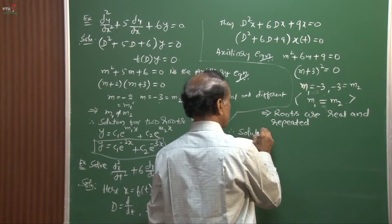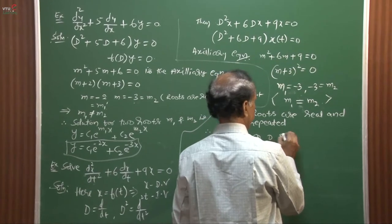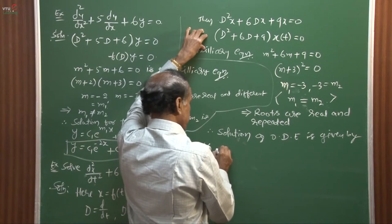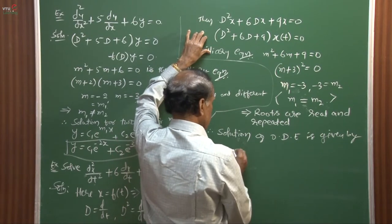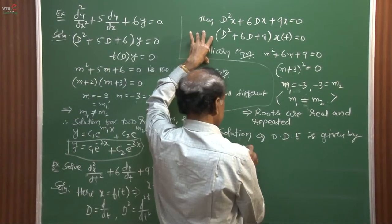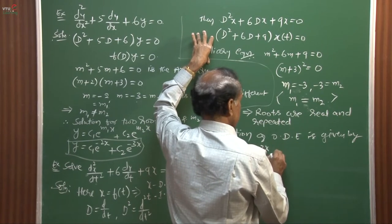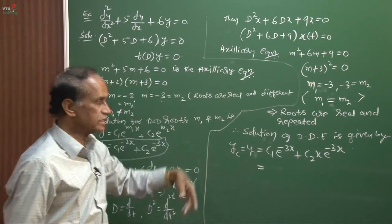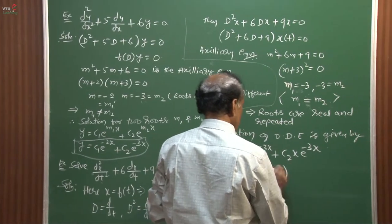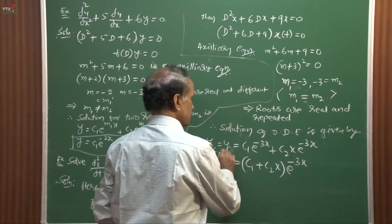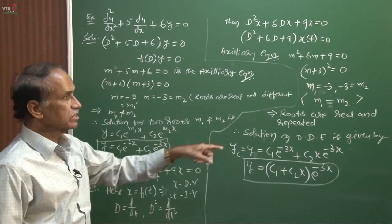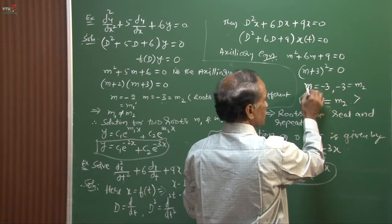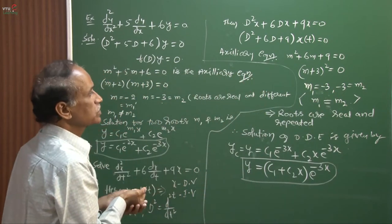This is the final solution for the case where the roots are real but repeated. Why are they real and repeated? Because (m + 3)² gives us m₁ = −3 and m₂ = −3 — both equal minus 3. Two roots said to be real and repeated. So these two are the problems for Case 1 and Case 2.